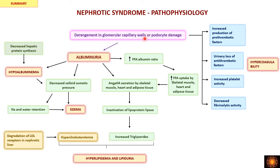In summary, the main cause is derangement of the glomerular capillary walls or podocyte damage. Most manifestations stem from albuminuria: albuminuria causes hypoalbuminemia, which decreases colloid osmotic pressure, causing edema; reduction in intravascular volume causes reflex sodium and water retention, further worsening edema.